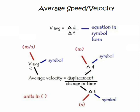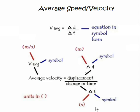Average velocity is the average, and the units are meters per second in physics. For displacement, the symbol is d, and we use meters for the units. Time is in seconds. We'll explain what the triangle means in a second.